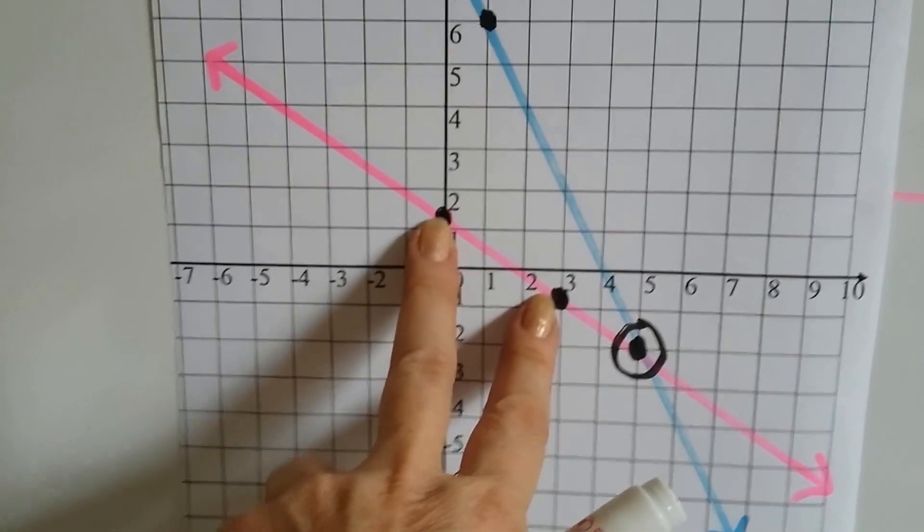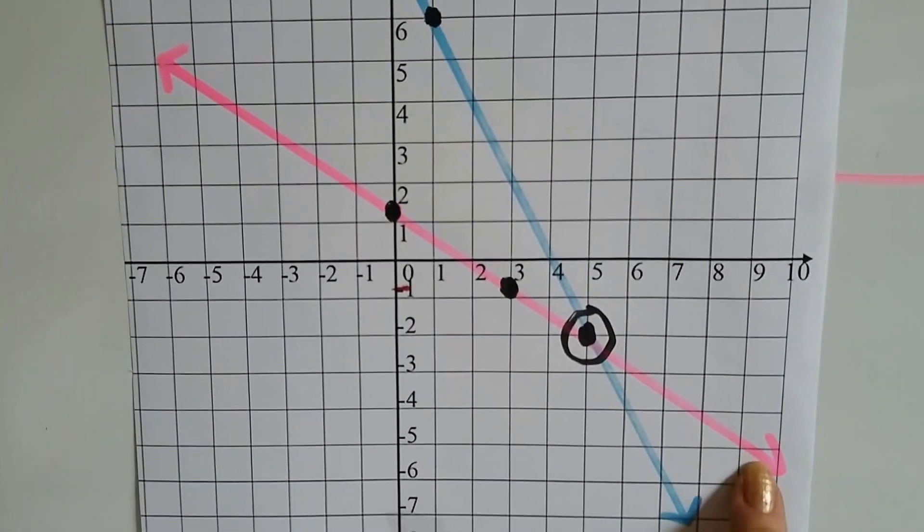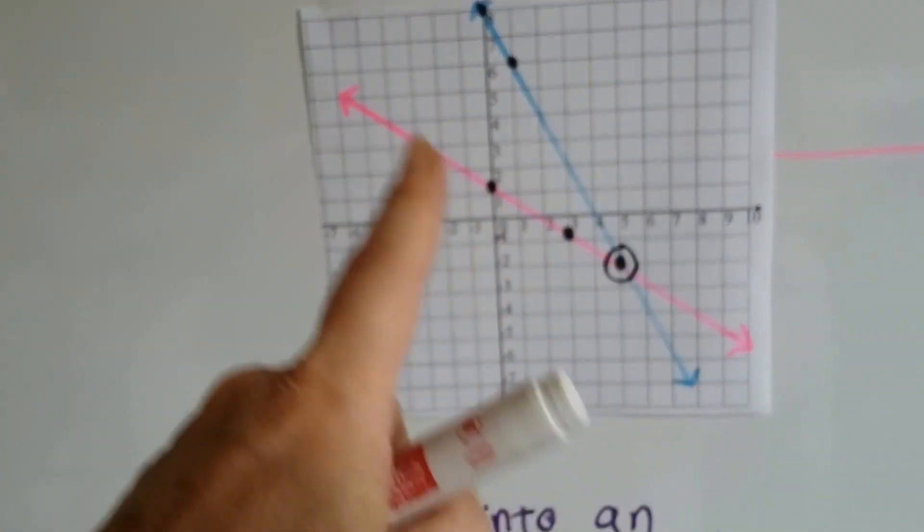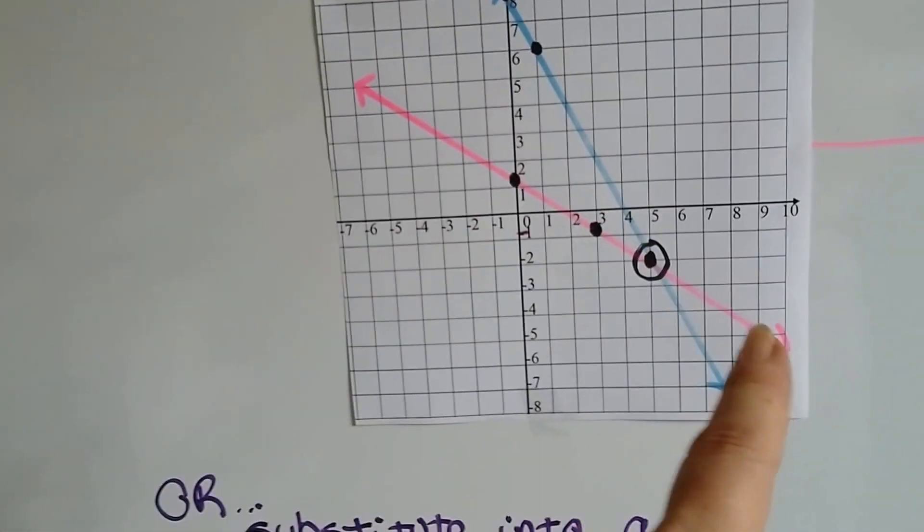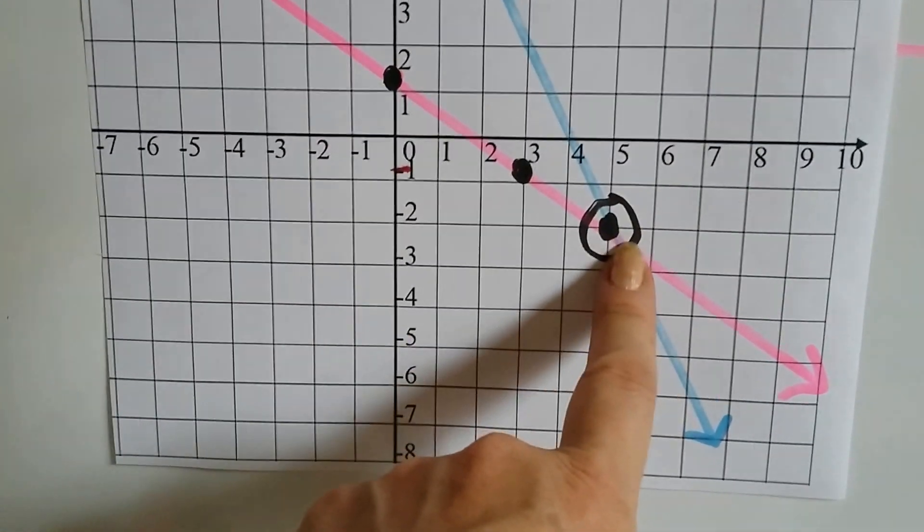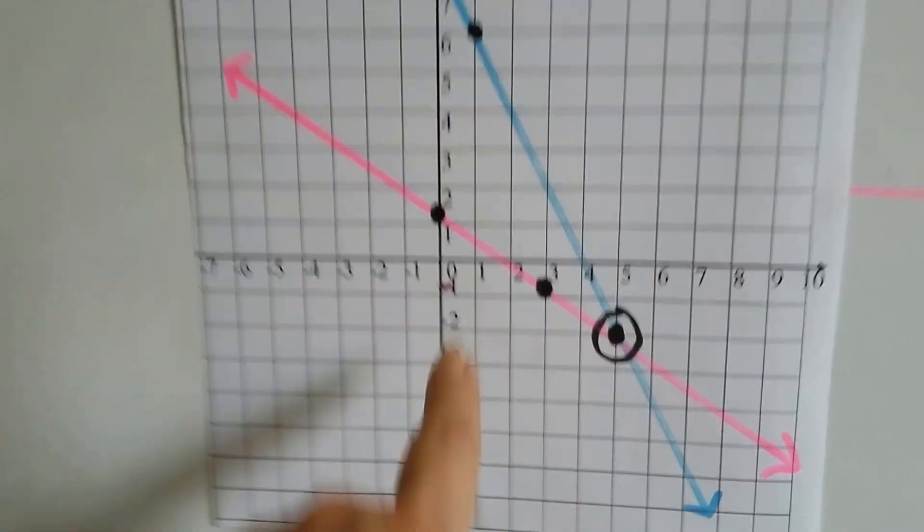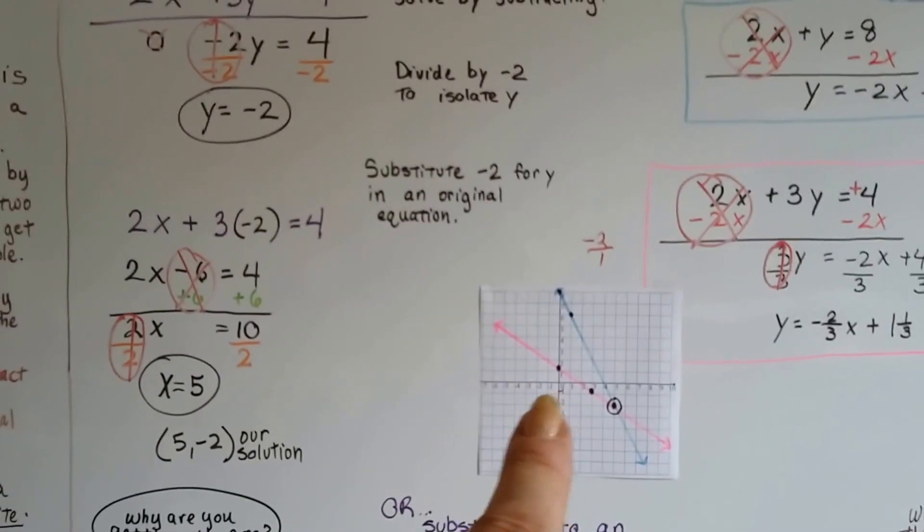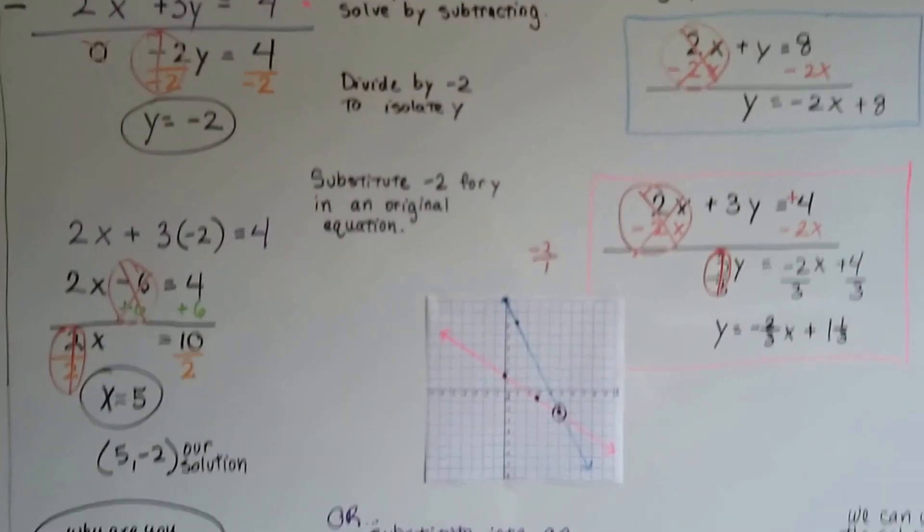So I use these two points to draw my pink line and see how this one, the blue one, had a very steep slope. And this one also had a negative slope but not as steep. So they did cross. And look where they crossed. They crossed at 5 and negative 2. So we were able to check it by graphing it. It was true. It did work.